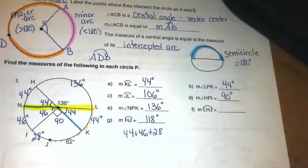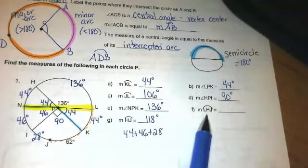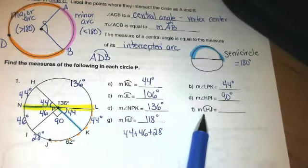Angle LPK, 44 degrees. Angle HPI, so I'm going to add up 44 and 46, find out that that's 90. Now here's an example of a major arc.